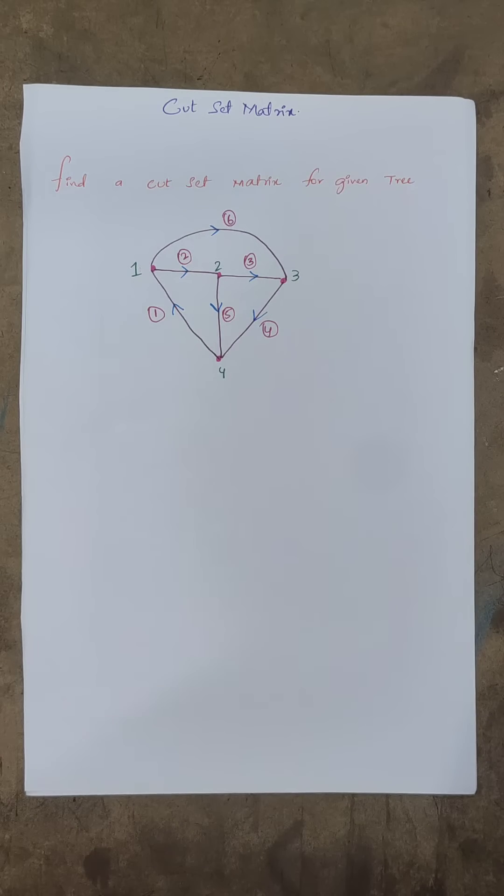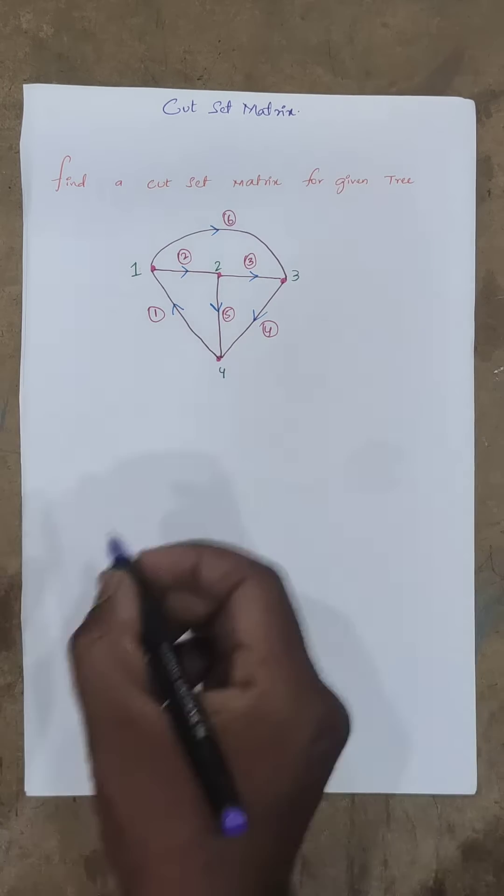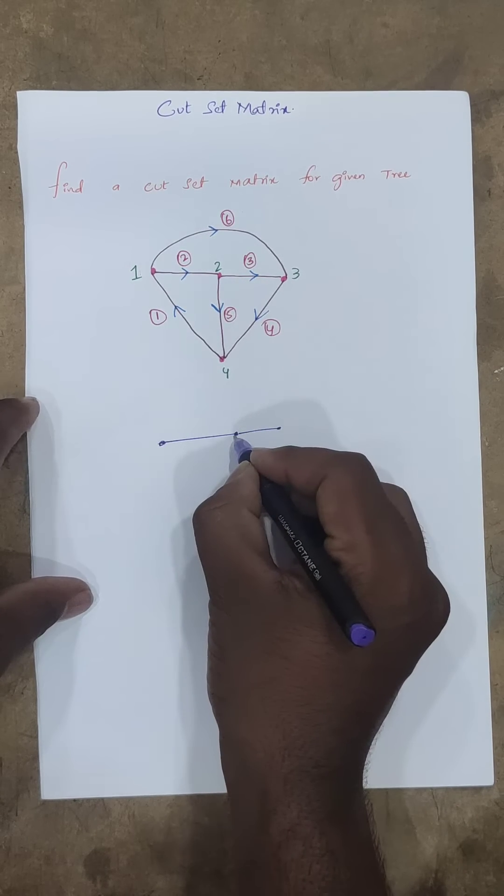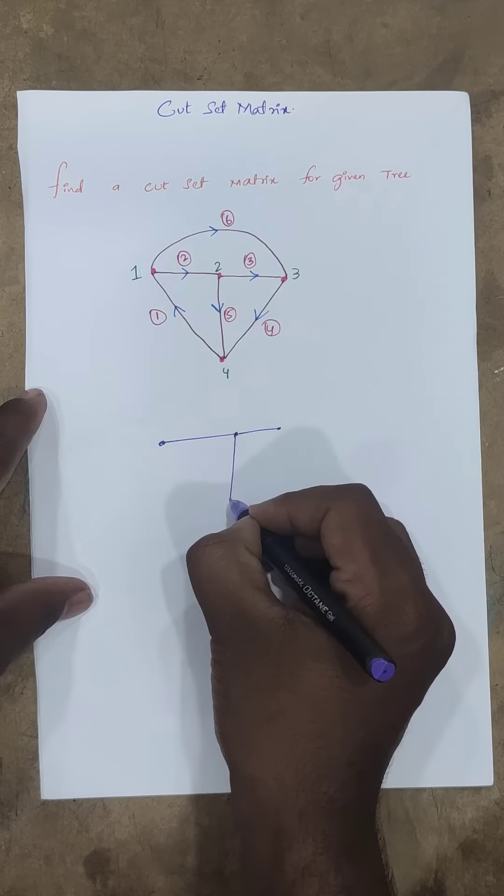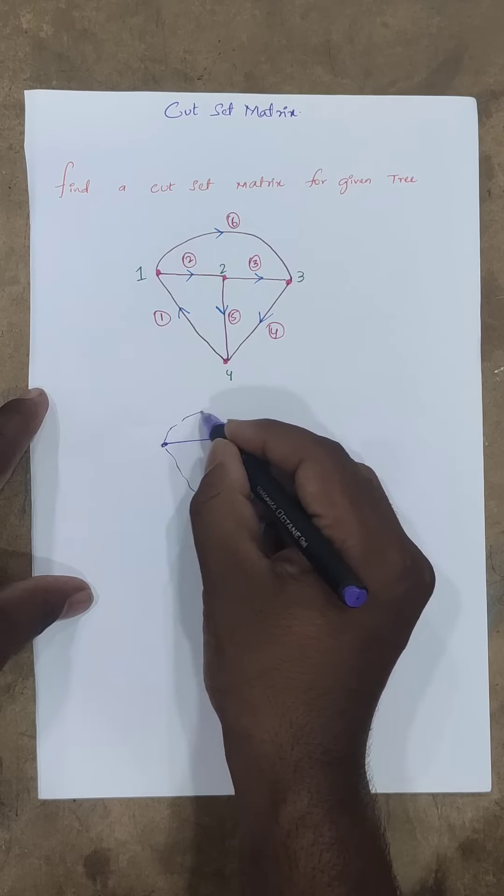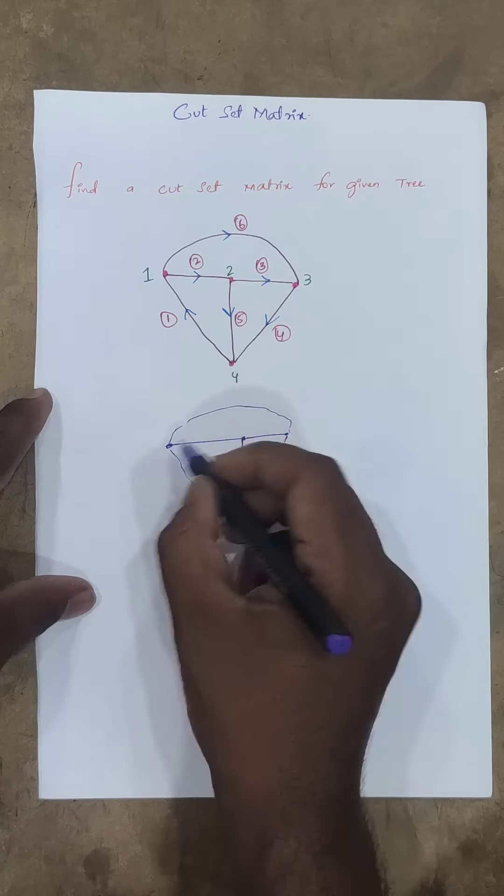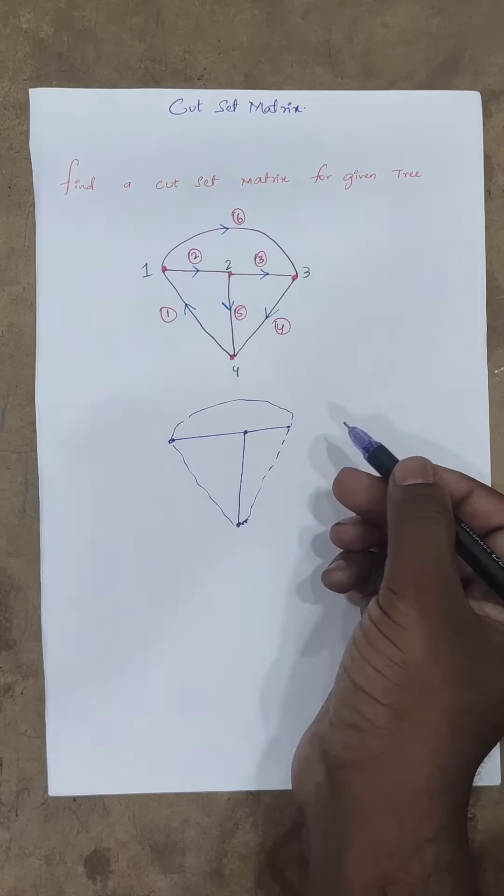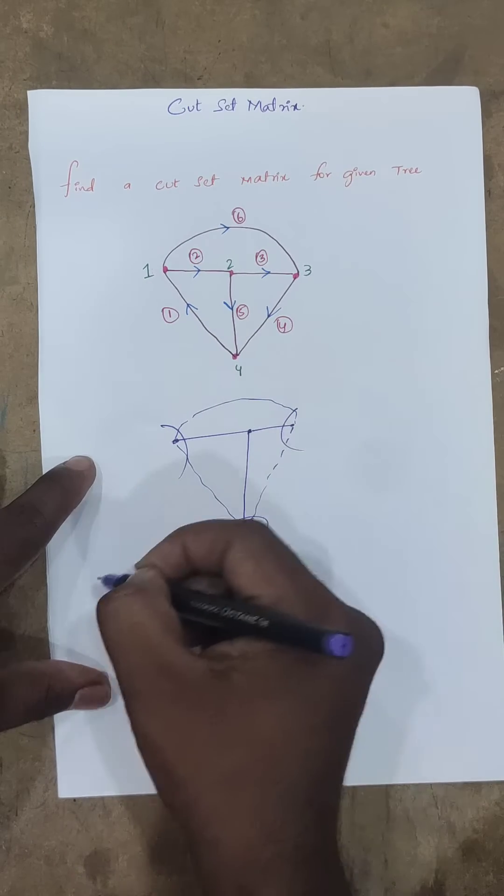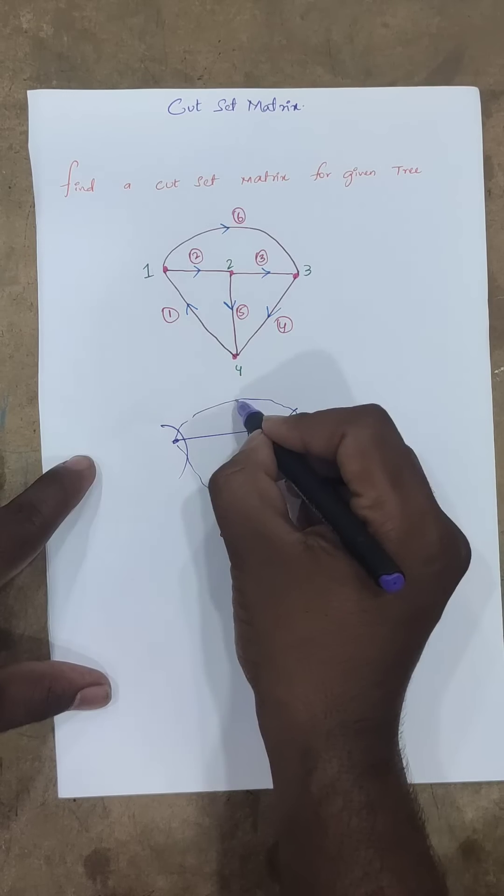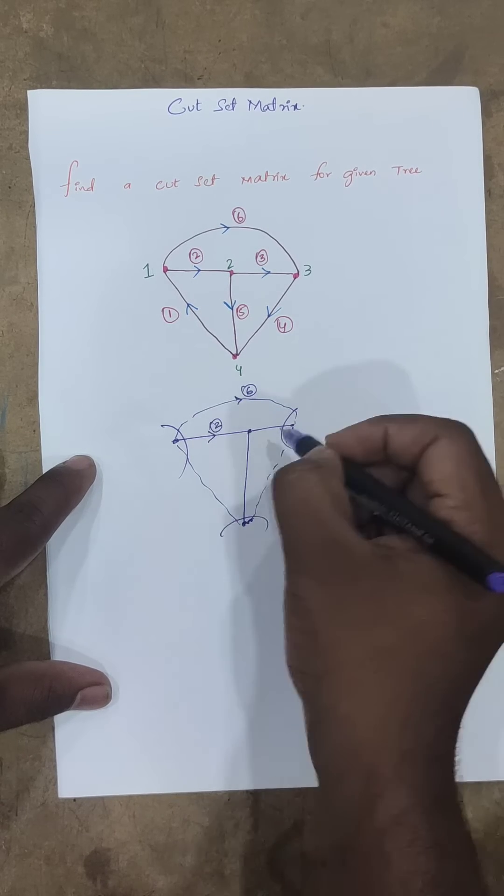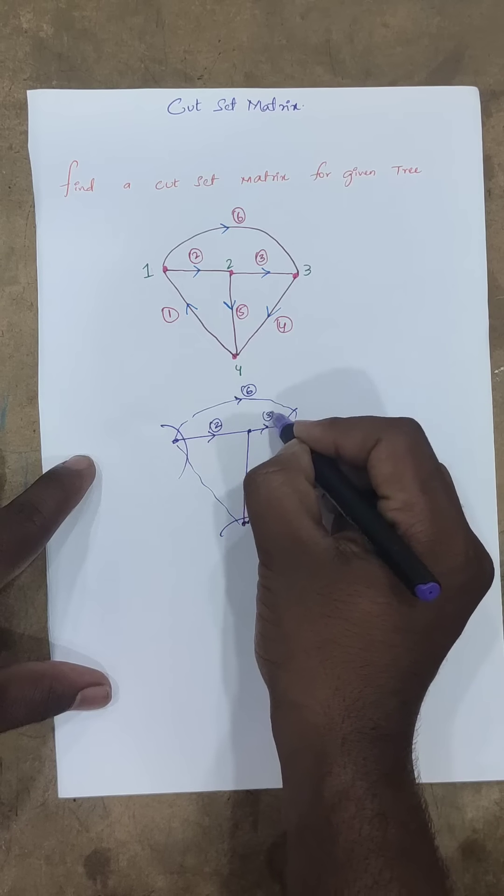I will talk about the cut set matrix. You need to draw the tree. This is the same process. The node is common, this is common junction. So this is done. This is not normal, it will be easy to do. Just on one paper, this is very easy to do.